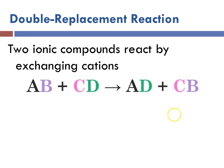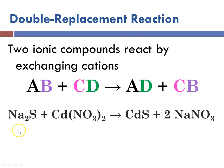So here, if we had AB plus CD, notice that A ends up with D, and C ends up with B. An example would be sodium sulfide reacting with cadmium nitrate to produce cadmium sulfide and sodium nitrate.